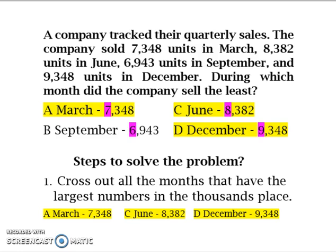Looking at our answer choices, we can see that we can cross out March, which is 7,348. We can cross out C, June, the number of units sold was 8,382.